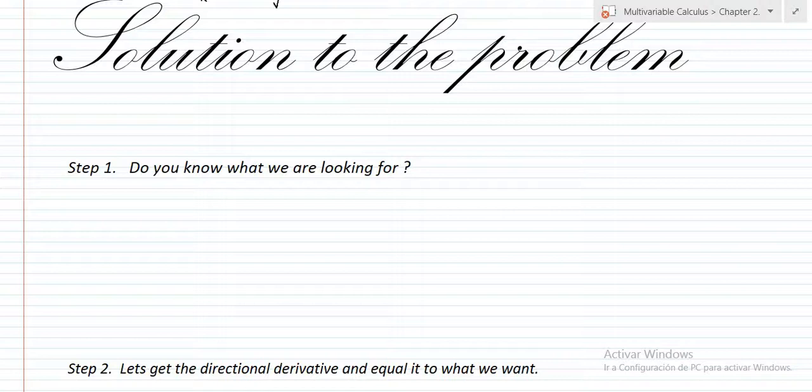What is the first question? What are we looking for? We're just looking for a vector V such that the directional derivative at the point (1,1) in the direction V is equal to 0.03. Okay, so what can you do here?